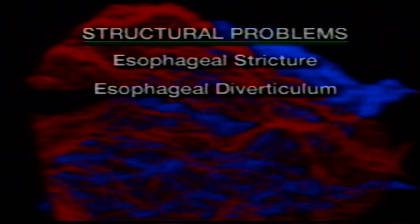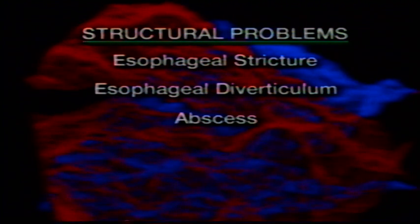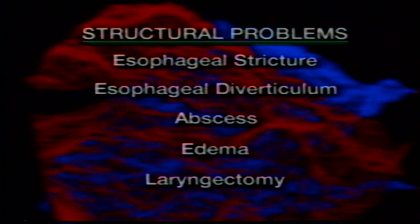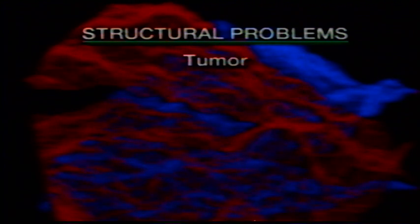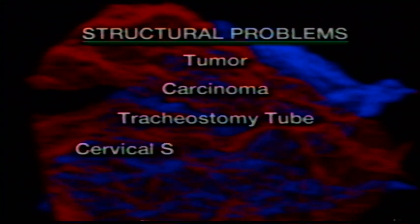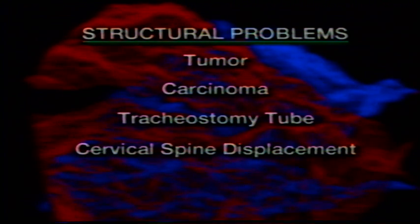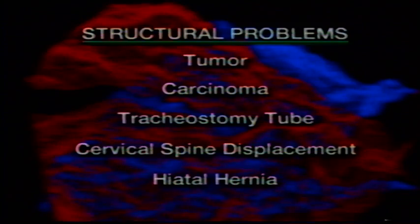A structural swallowing problem is an impairment or obstruction of the normal movement of food or liquid through the swallowing tract. Structural causes of dysphagia include esophageal stricture, esophageal diverticulum, abscess, edema, laryngectomy, tumor, carcinoma, tracheostomy tube, cervical spine displacement, and hiatal hernia.